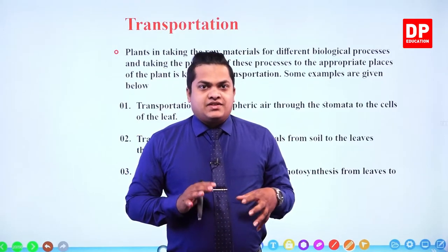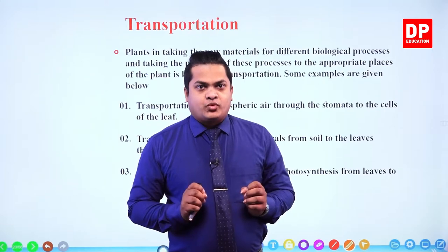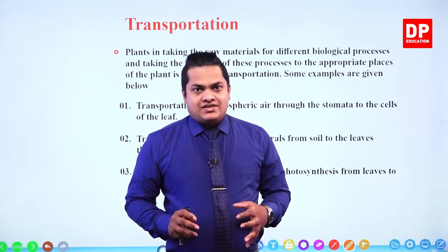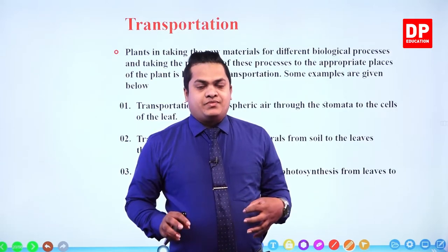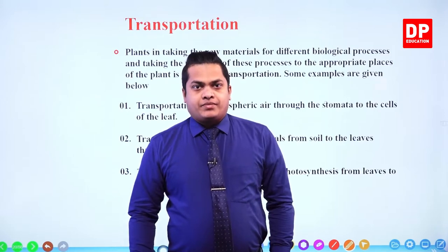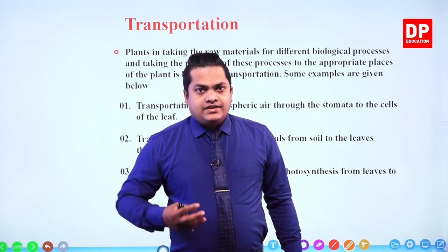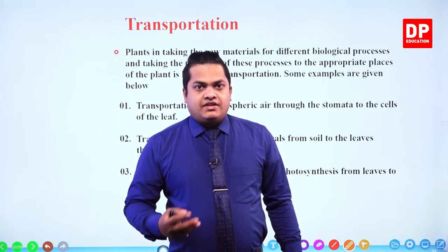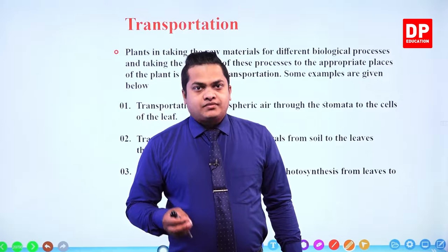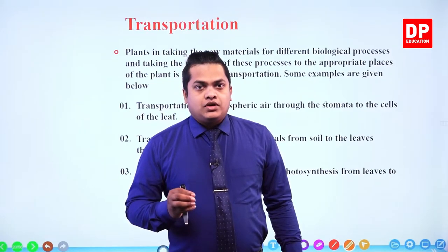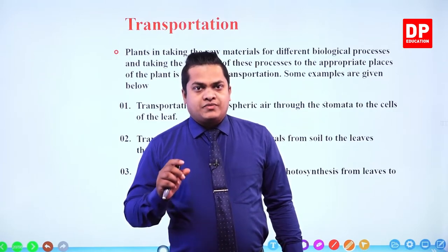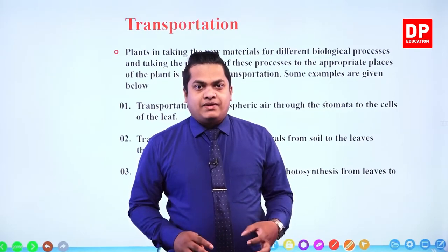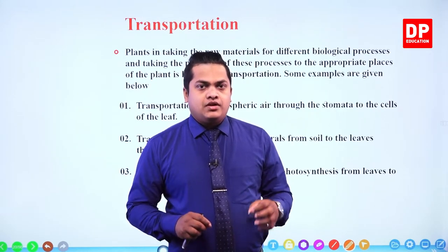In the earlier chapter we discussed several things related to photosynthesis. At the end of that chapter, I mentioned that there should be a mechanism to transport substances produced during photosynthesis. We discussed that these substances are mainly stored as starch within the plant leaf, then converted into a sugar solution and transported through phloem tissue to relevant places in the plant.